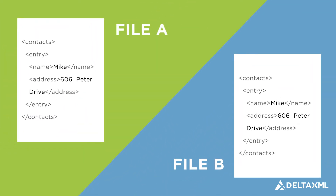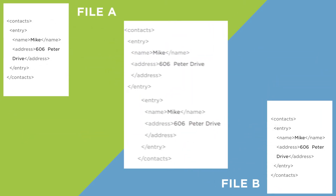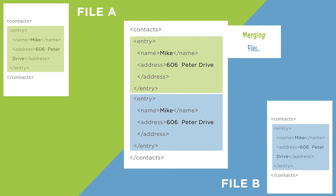Often, however, this simple approach does not work. For example, we are merging two names and address files together and we have an address for Mike in both files, but we want to have only one copy in the result, so we need to check for duplicates as we merge.